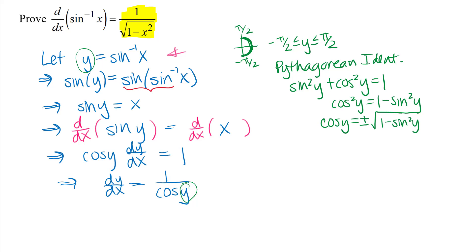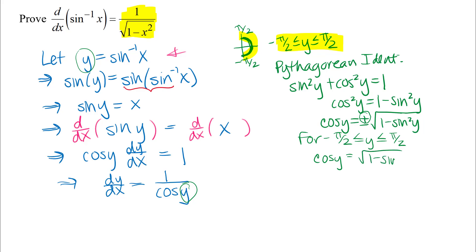Technically algebraically I have plus or minus there; however, remember that y has to be between negative pi over 2 and pi over 2 — the right half of the unit circle. On the right half of the unit circle, cosine is positive. So because of the restriction on y from negative pi over 2 to pi over 2, the cosine will be positive, and I don't have the minus in front of the radical. So cosine of y equals the positive square root of 1 minus sin²(y).